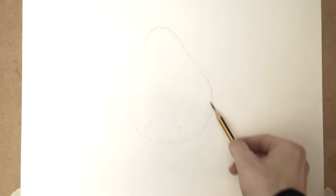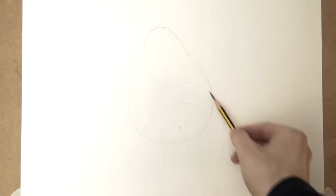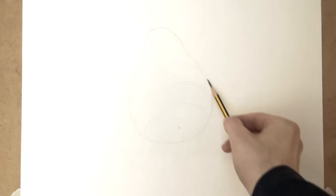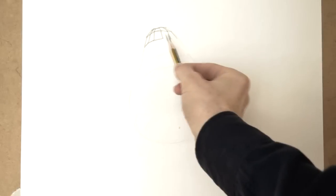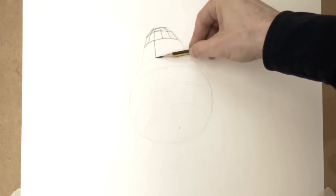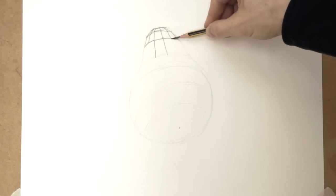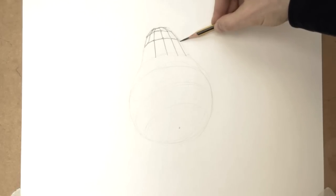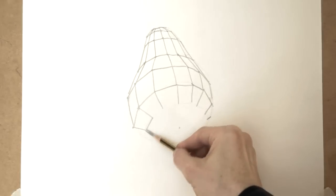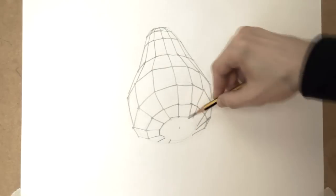Do not just copy a vegetable's outline, but construct the item's volume and perspective using the principles of constructive drawing. Imagine that the cucumber or pear you're drawing has multiple flat surfaces, planes. Depict these planes as you did with the geometric shapes previously.